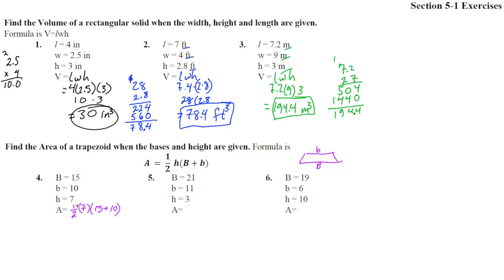One half times 7, that's 7 halves, times 25. 25 times 7, divided by 2. So 25 times 7: 7 times 5 is 35, carry the 3. 7 times 2 is 14, plus 3 is 17. We're going to divide that by 2. 2 into 175: 2 goes into 17, 8 times. Carry the 5 down, 2 goes into 15, 7 times. Put a decimal there, so we get 87.5. No units to worry about.